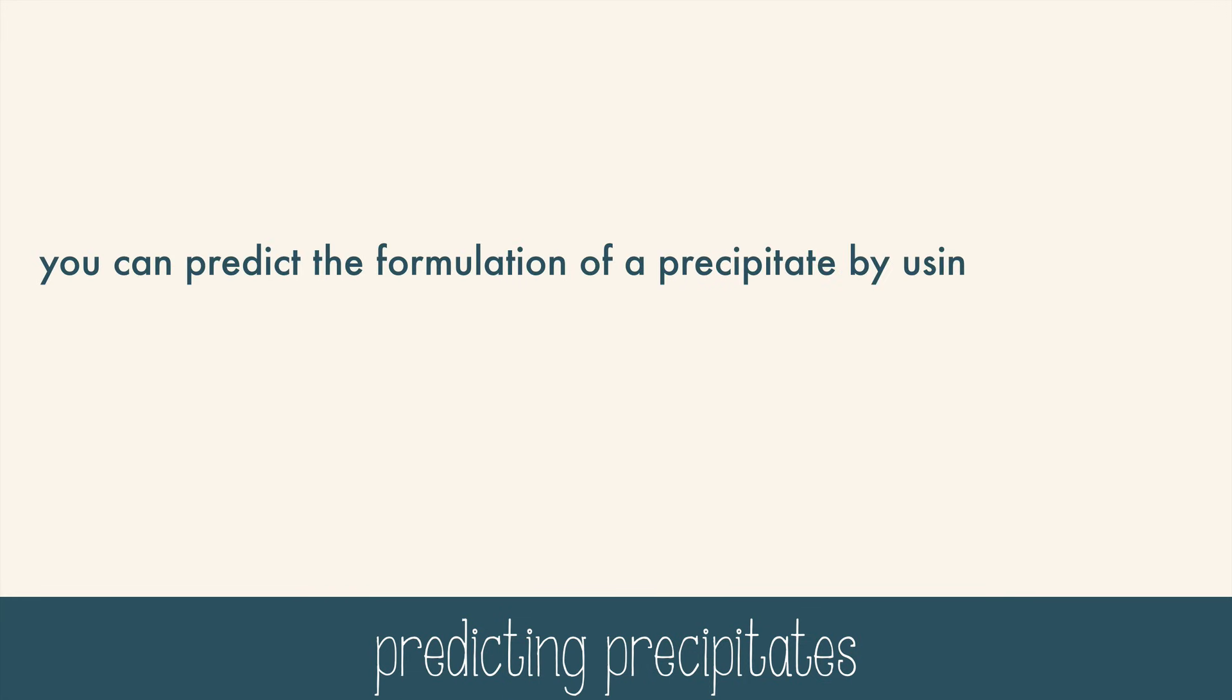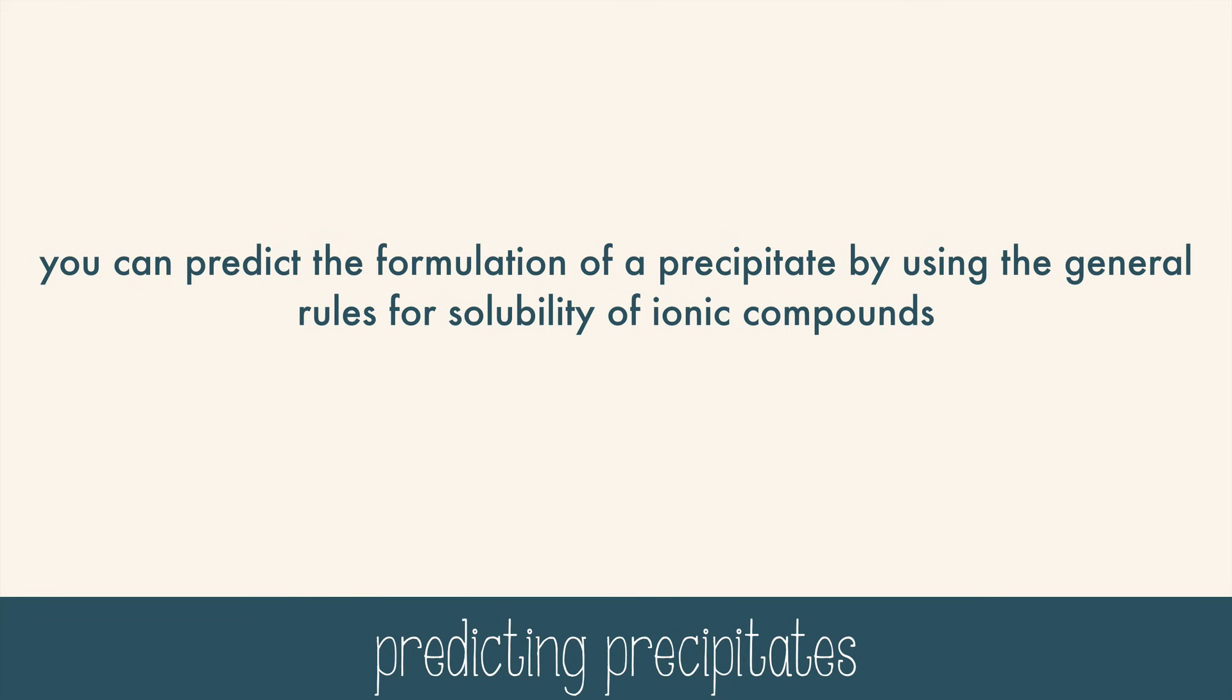You can predict the formulation of a precipitate by using the general rules for solubility of ionic compounds. Now how do you know what the rules are? You can look them up in a chart. Most compounds are soluble, with a few exceptions. And the carbonates, phosphates, chromates, sulfides, and hydroxides are mostly insoluble, meaning they will most likely form the precipitates. Using these rules, you can figure out which product will form the precipitate.